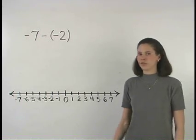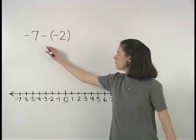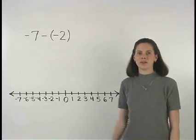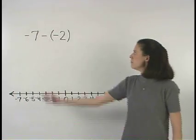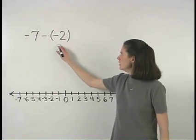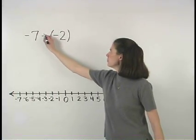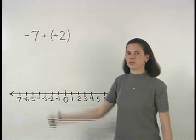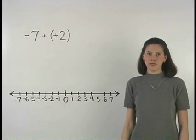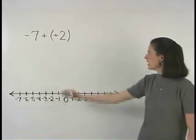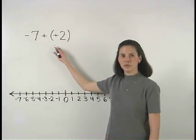To subtract the integers negative 7 minus negative 2, it's important to understand that when we have minus a negative, we can change it to plus a positive. So negative 7 minus negative 2 becomes negative 7 plus positive 2.